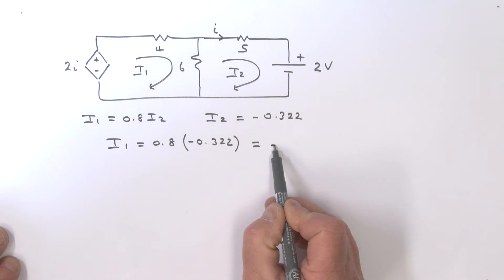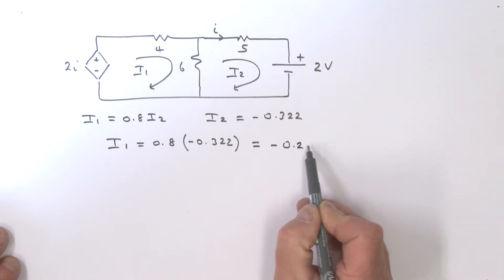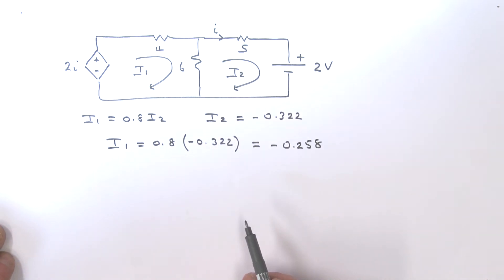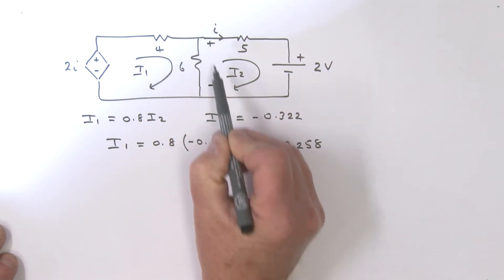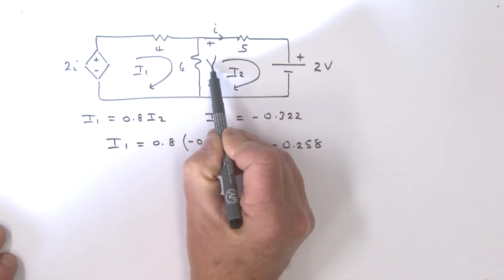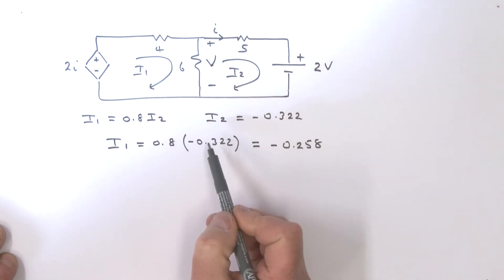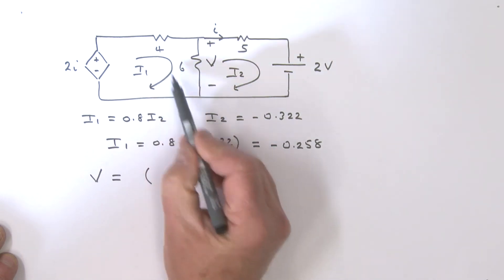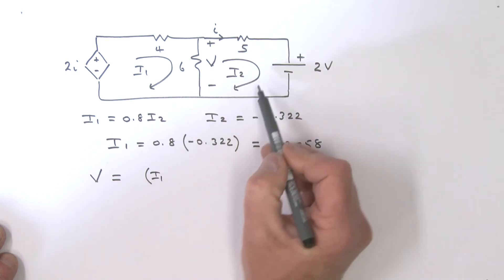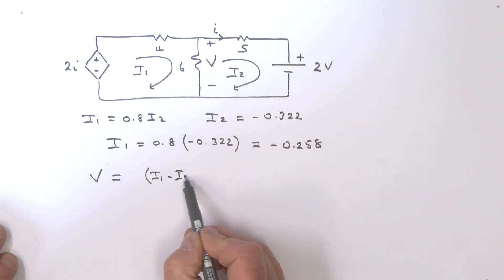So what is it that we're trying to find here? We're trying to find this voltage, plus minus, which we're calling V. That's the voltage we're trying to find. We can say that voltage V is really equal to, open up a bracket, this is going to be I1 minus I2, multiplied by that 6.